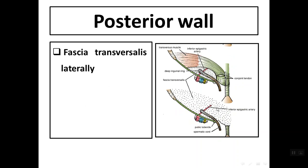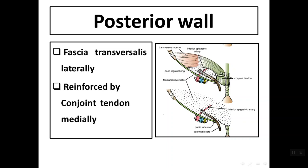The posterior wall is formed mainly by the fascia transversalis laterally, and it is reinforced medially by the conjoined tendon — the tendon of the internal oblique and transversus abdominis muscle.